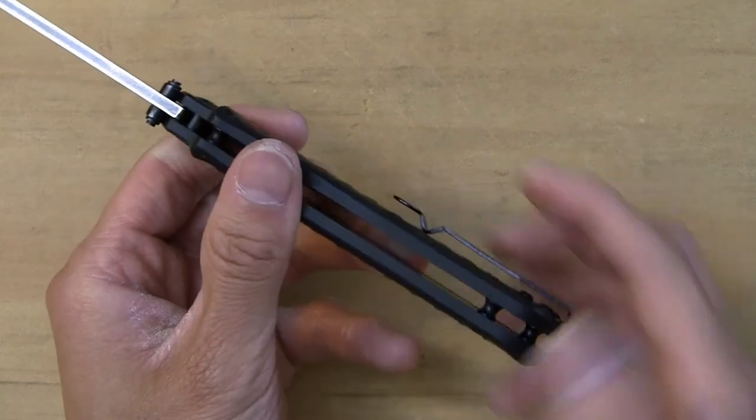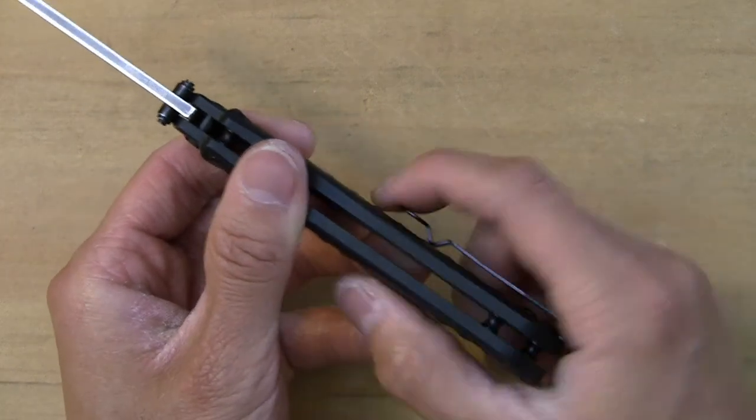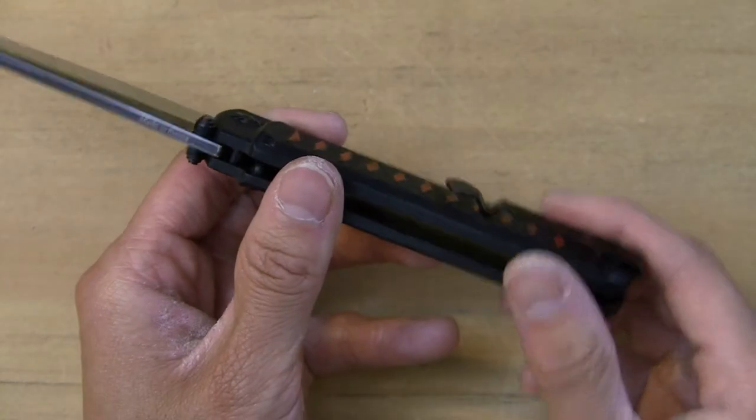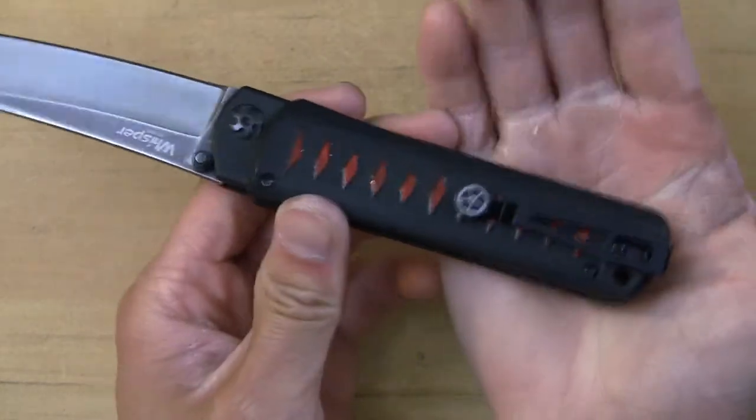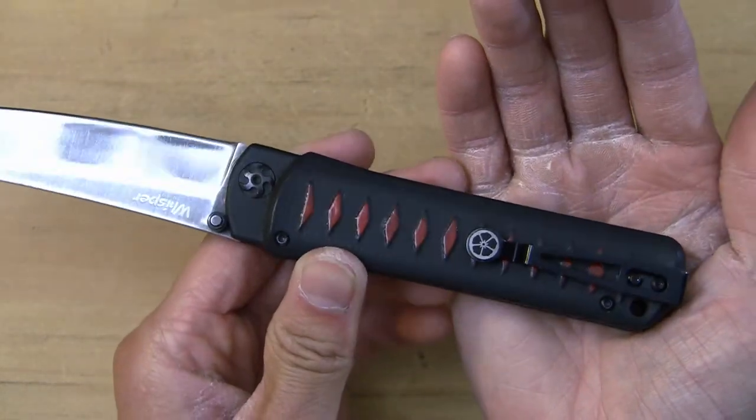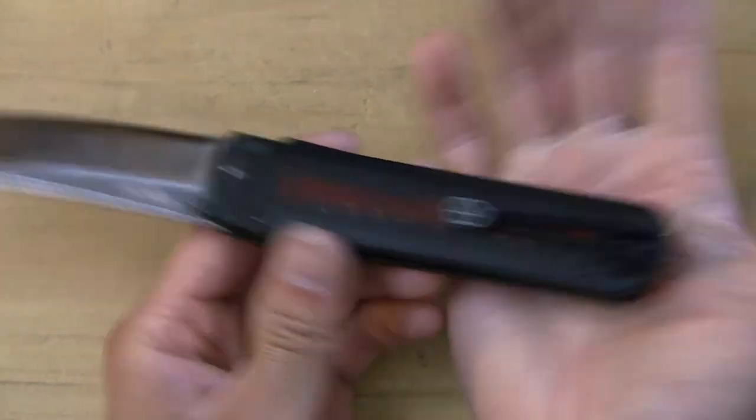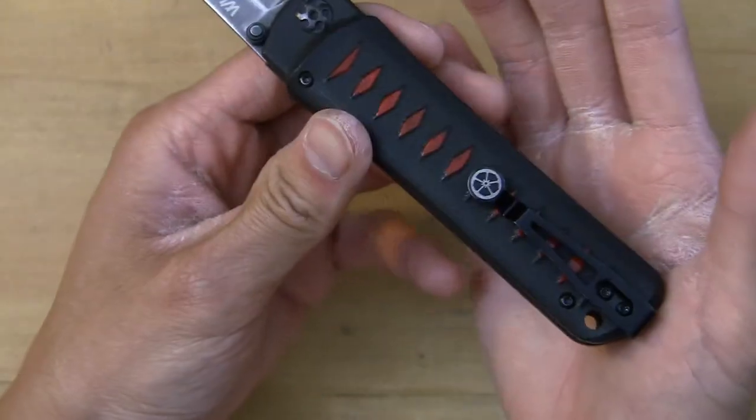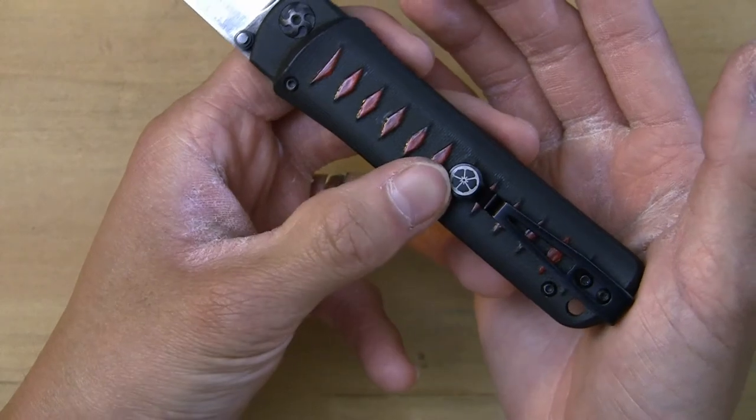At first I thought it would be hard to pull out of your pants pocket, but I can actually hook my finger right here and grab like this and deploy the knife. It's very easy. At the same time you got this nice little decorative pivot - or sorry, decorative family crest on the pocket clip here.